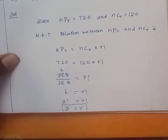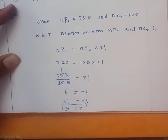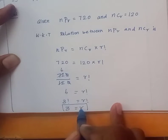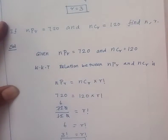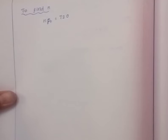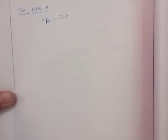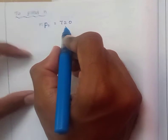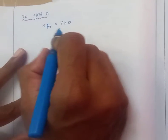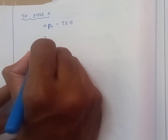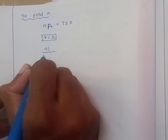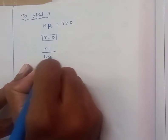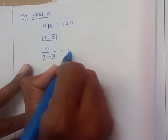Now we want to find the N value. We have R equal to 3. The formula for nPr is N factorial divided by N minus R factorial, equal to 720.